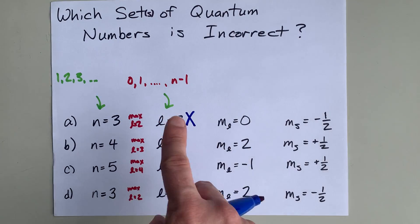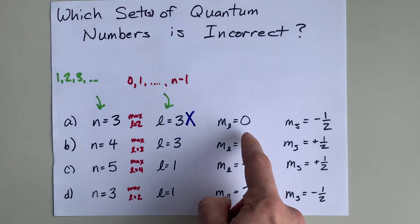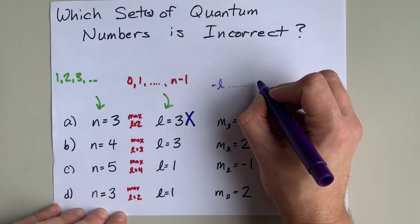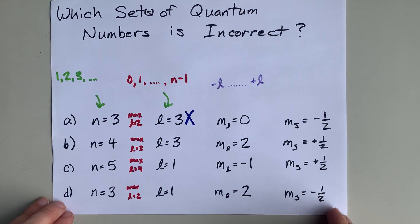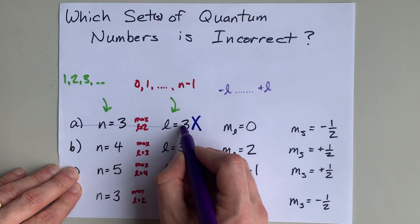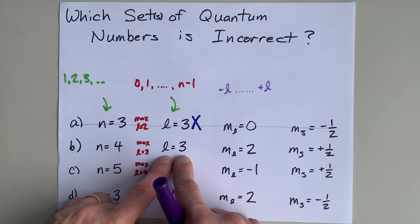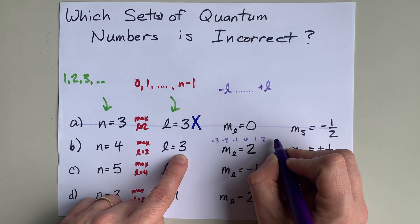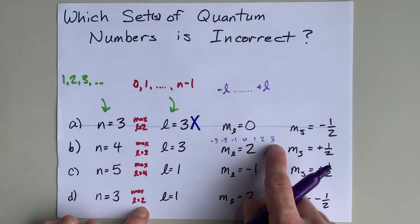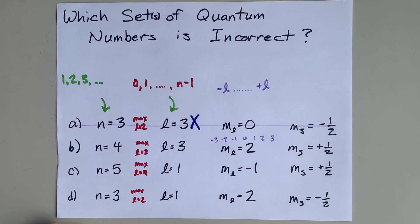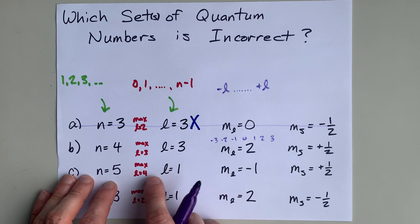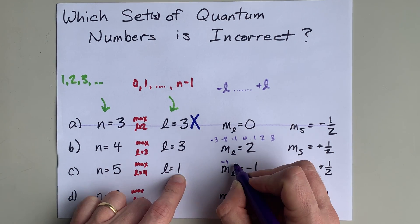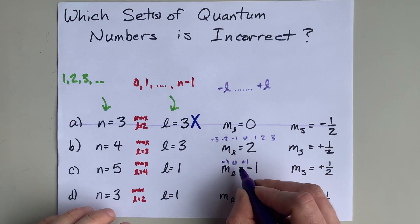But this one also says which sets, so maybe another one's incorrect. Let's go find out. ML is then based off of L. You have to count from whatever negative L is all the way up to whatever positive L is. So, well, A is already fake news, so we're not even going to worry about that anymore. But when L is 3, the allowed values of ML are negative 3, negative 2, negative 1, and I'm counting all the way up to positive 3. 2 is in that range, and therefore is allowed here. When L is 1, for electrons in the fifth energy level that also have L equals 1, ML is allowed to be negative 1 up to positive 1. And so negative 1 is allowed there as well.